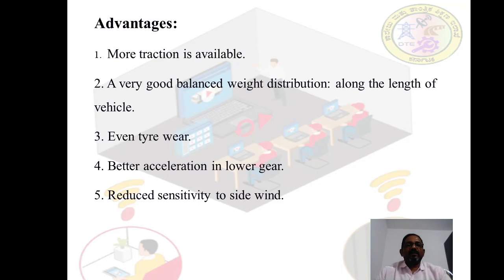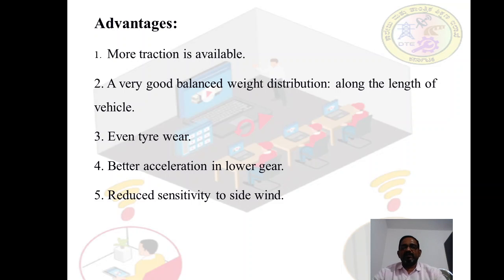The advantages of this permanent four-wheel drive with viscous coupling are: more traction is available; very good balanced weight distribution along the length of the vehicle; even tire wear; better acceleration in lower gear; reduced sensitivity to side weight transfer; and an increase in drive-off and climbing capacity regardless of the load, because the viscous coupling plays an important role in transmitting torque when there is a difference in traction. It also provides stability on slush and compacted snow tracks depending on road conditions.